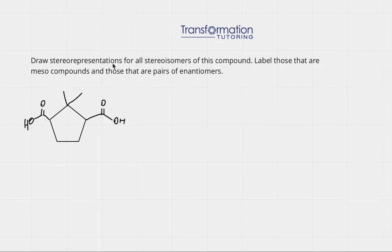Draw stereo representations for all stereoisomers of this compound. Label those that are meso compounds and those that are pairs of enantiomers.